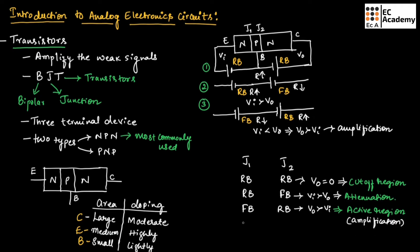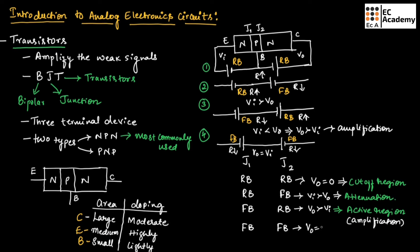In the fourth condition, Junction J1 is forward biased and Junction J2 is also forward biased. Due to forward bias on both junctions, resistance across J1 and J2 is low. Here, output voltage will be equal to input voltage. This operating region is known as the saturation region.